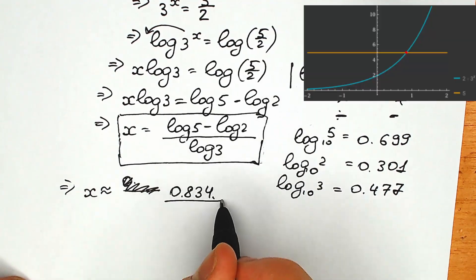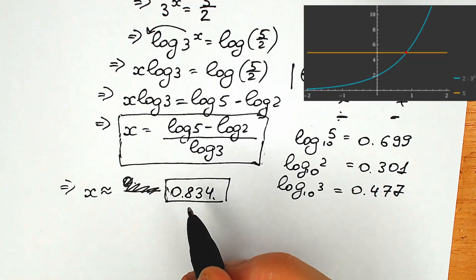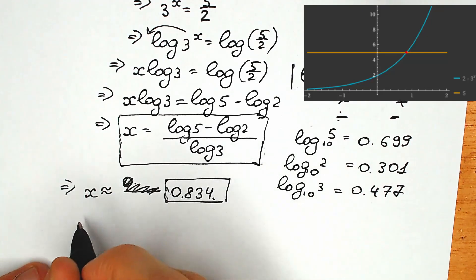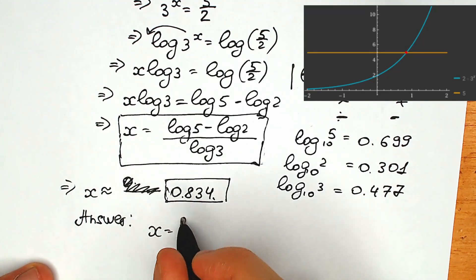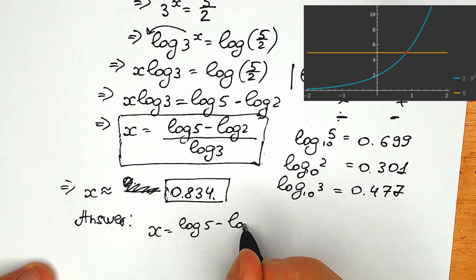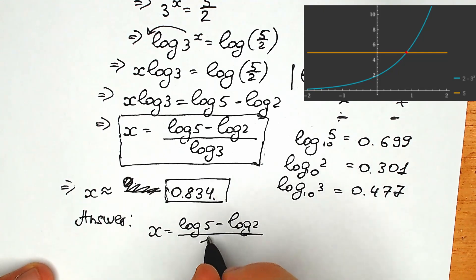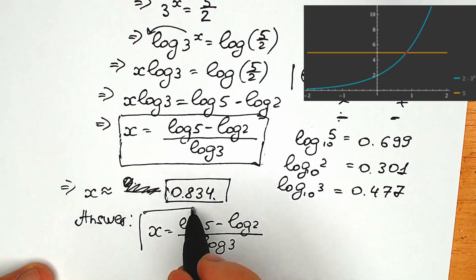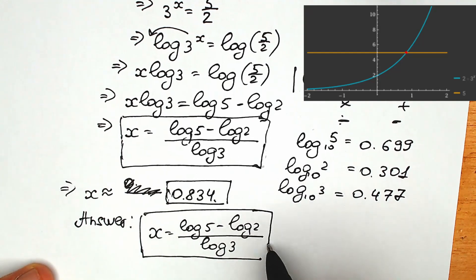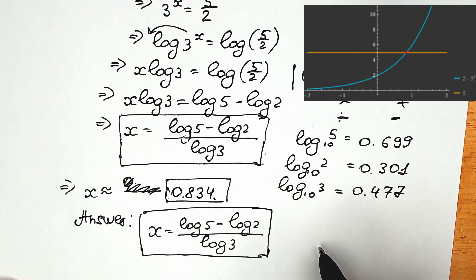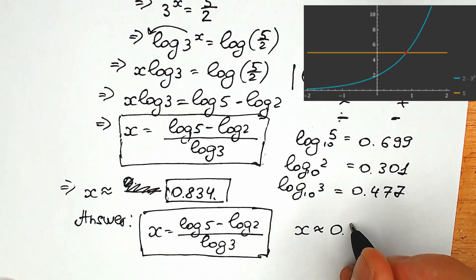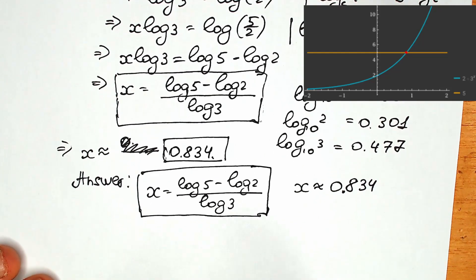So 0.834 is our correct approximate answer to this question. Let's write the final answer once more. Our x equals (log 5 minus log 2) divided by log 3. If you're sitting an exam without a calculator, this exact form is a great answer. If you're allowed to use a calculator, then x is approximately 0.834.